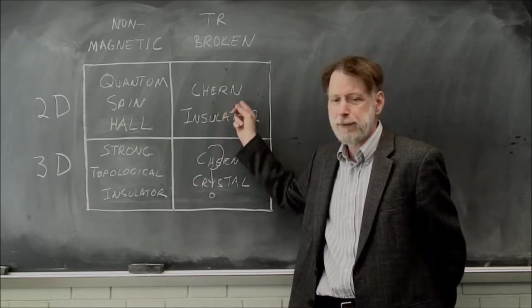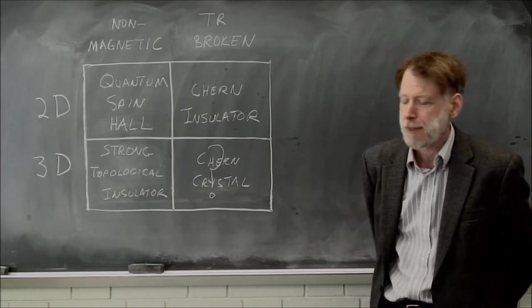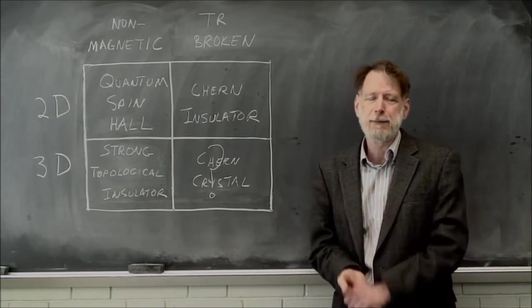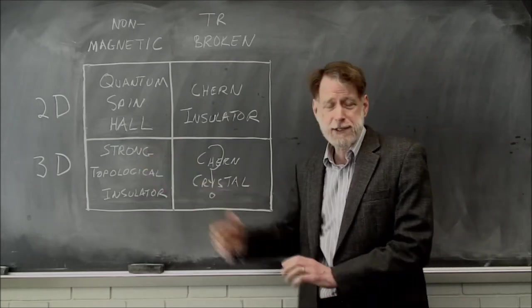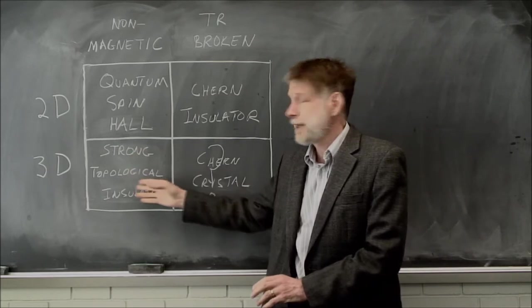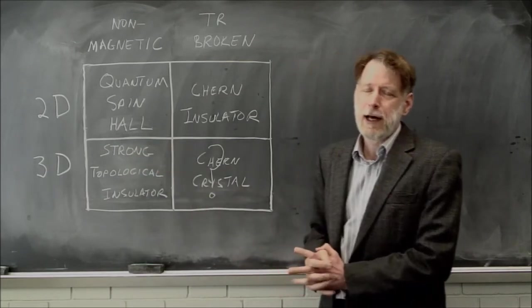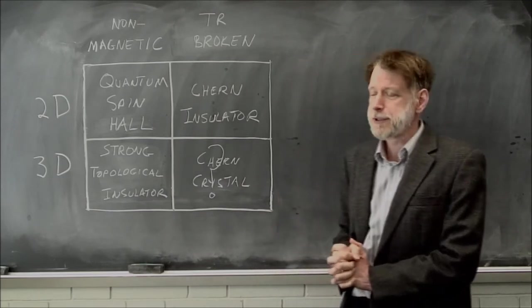the Chern insulator, epitomized by the Haldane model, and the quantum spin Hall insulator, which is a kind of a doubled time-reversal invariant version of that. In this segment, you'll be learning more about three-dimensional strong topological insulators, which are also non-magnetic materials with time-reversal symmetry.